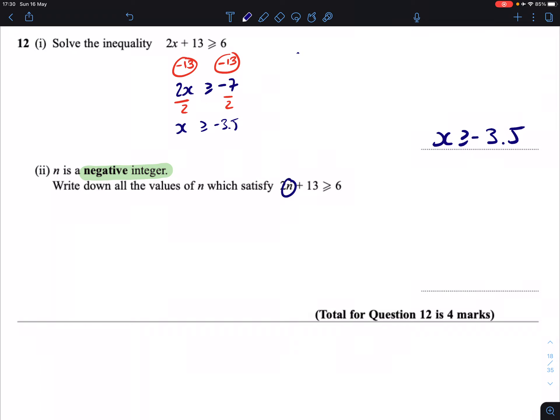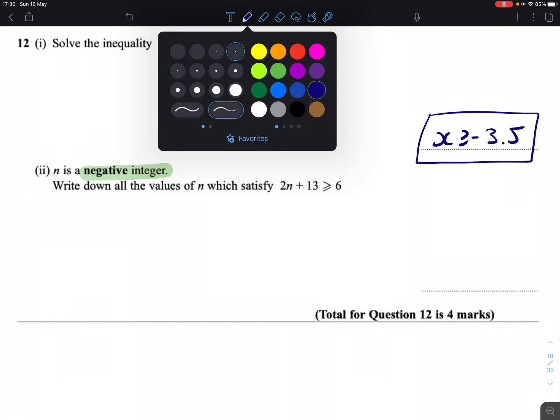When it says values of n, it's basically the same thing as the x that we've just figured out, except it's got an n instead. So if we think about all the values that are bigger than negative 3.5, which of those are negative integers?